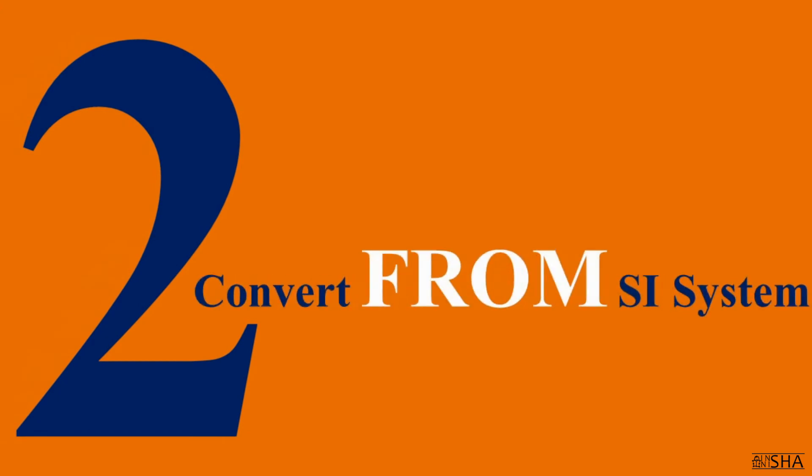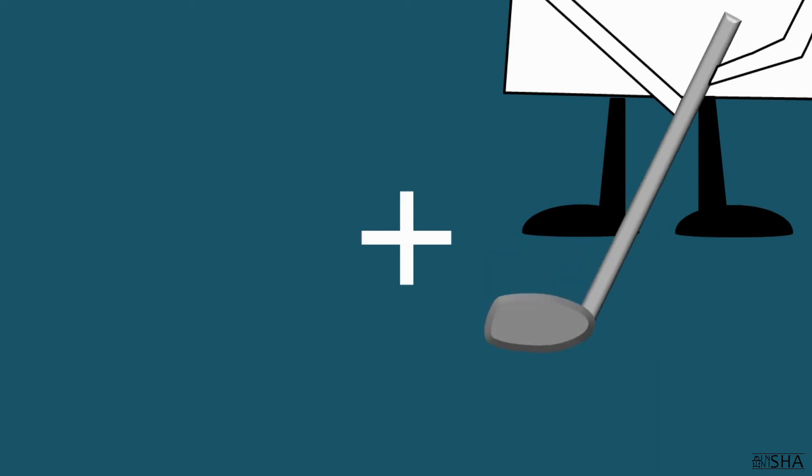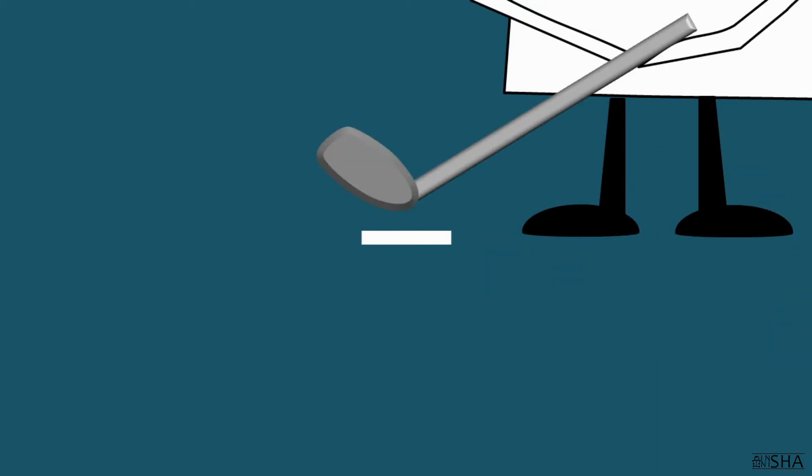Now let's take a look at rule number two. Here, we convert units of measurement from the SI system to other units. Here we do exactly the same thing as we did according to the first rule, only with changing the sign of the exponent to the opposite one.